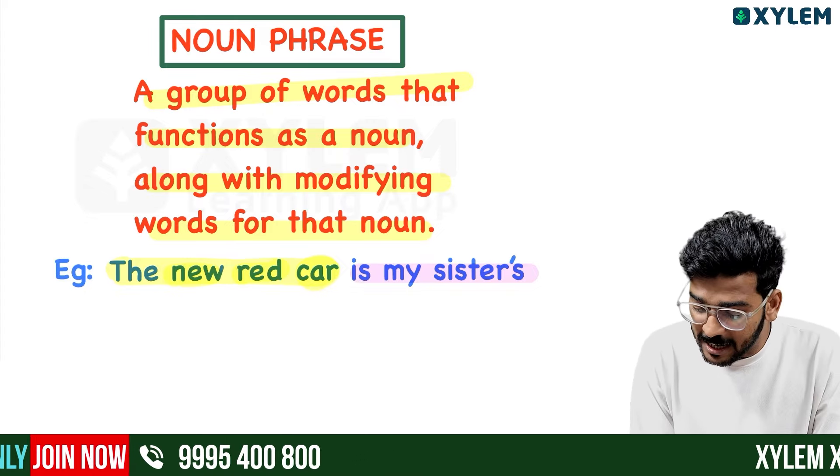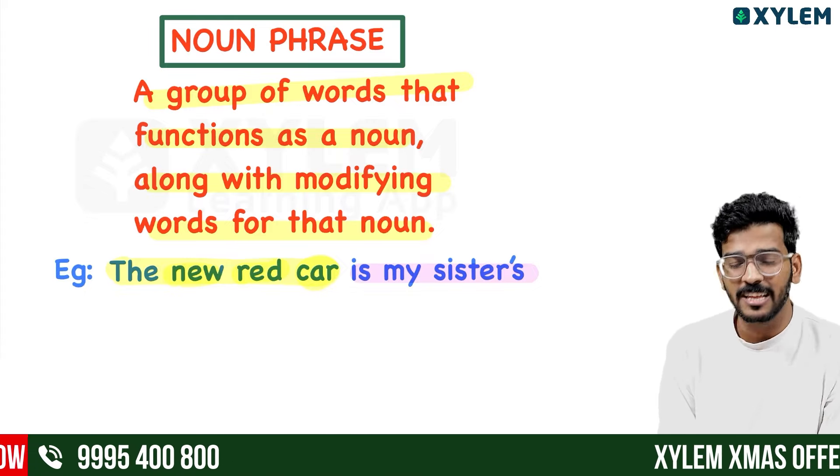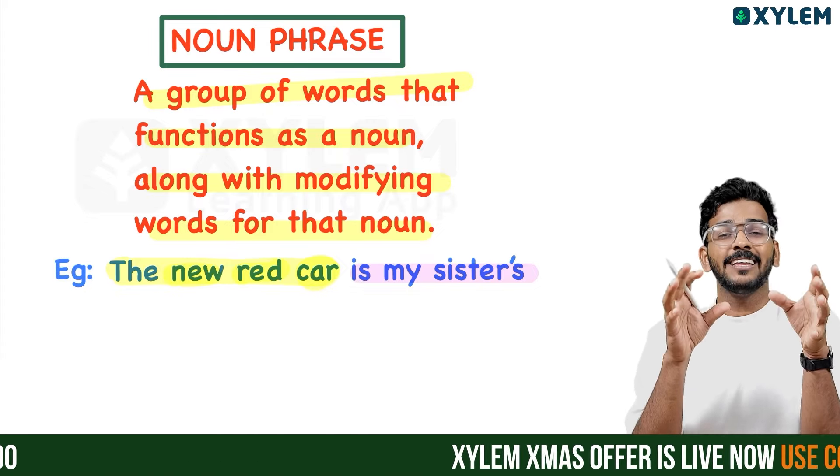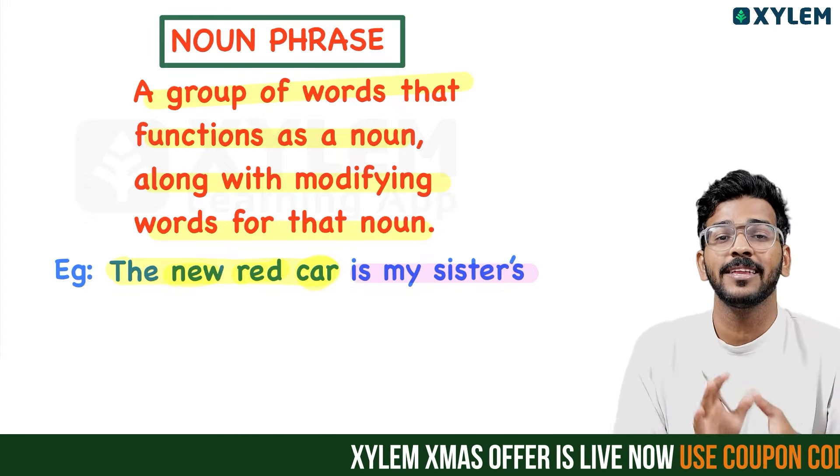So if we use a noun phrase, the main noun is the head of that phrase. The main noun remains the same while the modifiers describe it.